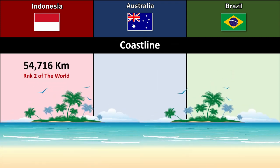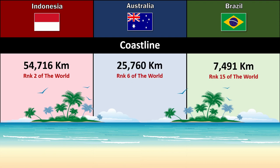Coastline: Indonesia 54,716 km, Australia 25,760 km, Brazil 7,491 km.